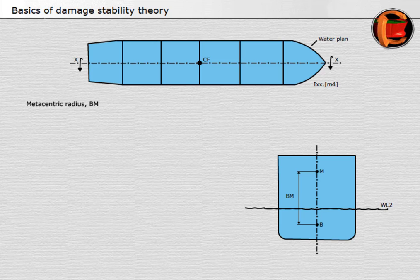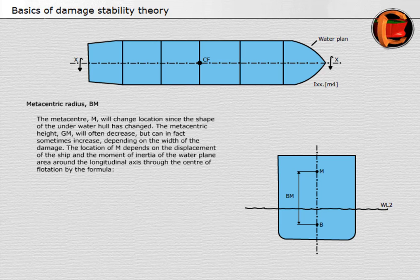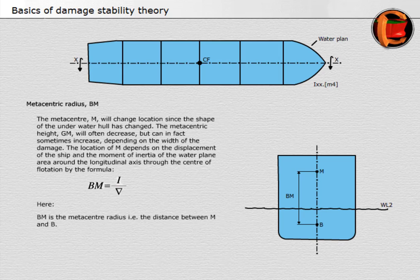Metacentric radius BM: the metacenter M will change location since the shape of the underwater hull has changed. The metacentric height GM will often decrease, but can sometimes increase depending on the width of the damage. The location of M depends on the displacement of the ship and the moment of inertia of the water plane area around the longitudinal axis through the center of flotation, by the formula: BM is the metacentric radius — the distance between M and B — where I is the moment of inertia of the water plane area, and V is the volume of displacement.